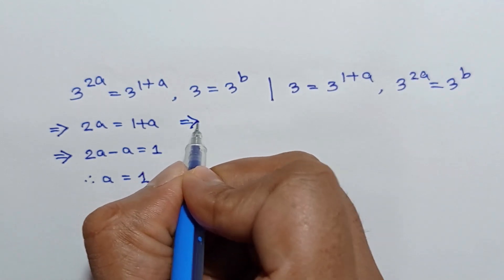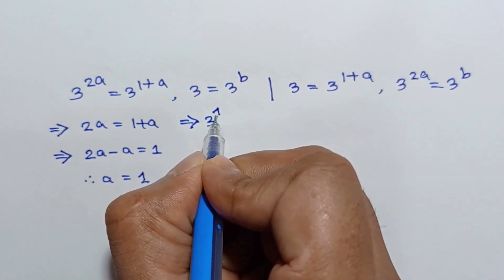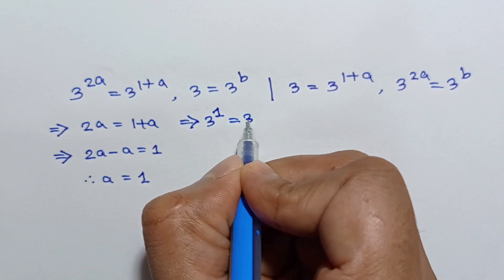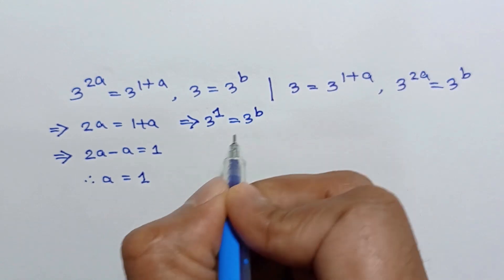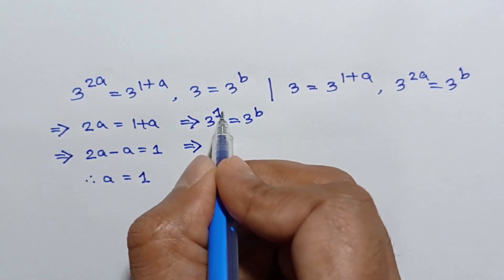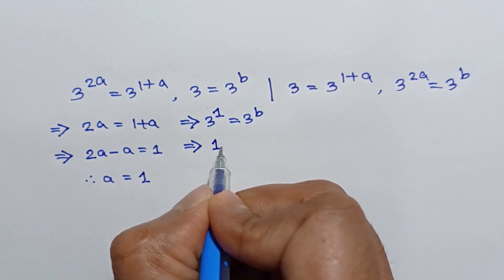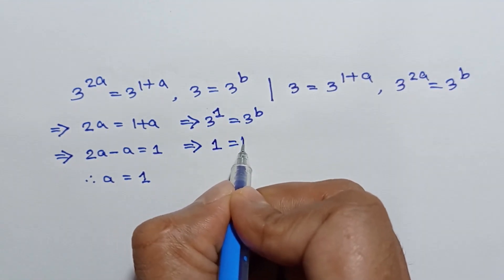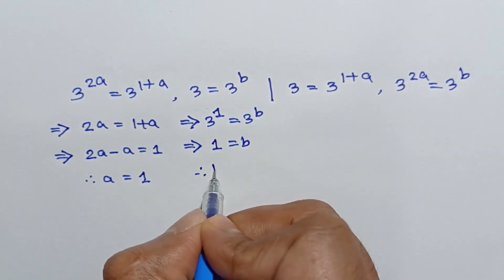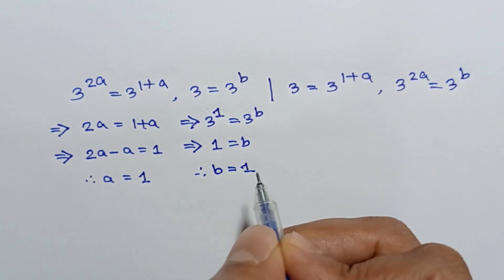And from here, 3 to the power 1 is equal to 3 to the power b. Here the bases are the same, so the powers are equal, giving 1 is equal to b. So we find b is equal to 1.